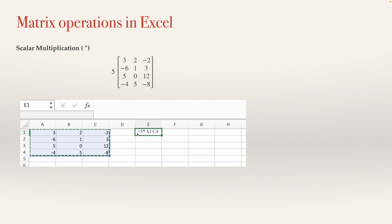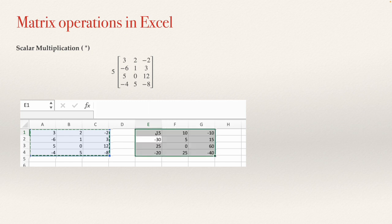So this is what you need to do: type equal first, then the scalar, the multiplication sign, and then A1:C4. To see the answer, just press Enter. The matrix will appear starting from the cell you selected — it will be the first row, first column of the result matrix. That's the way we make a scalar multiplication.